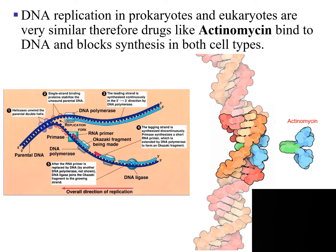DNA replication in prokaryotes and eukaryotes are very similar. Therefore, drugs like actinomycin can bind to DNA and it can block the synthesis in both cell types, prokaryotes and eukaryotes. So, if you take actinomycin, it will affect eukaryotic cells just like it affects prokaryotic cells.